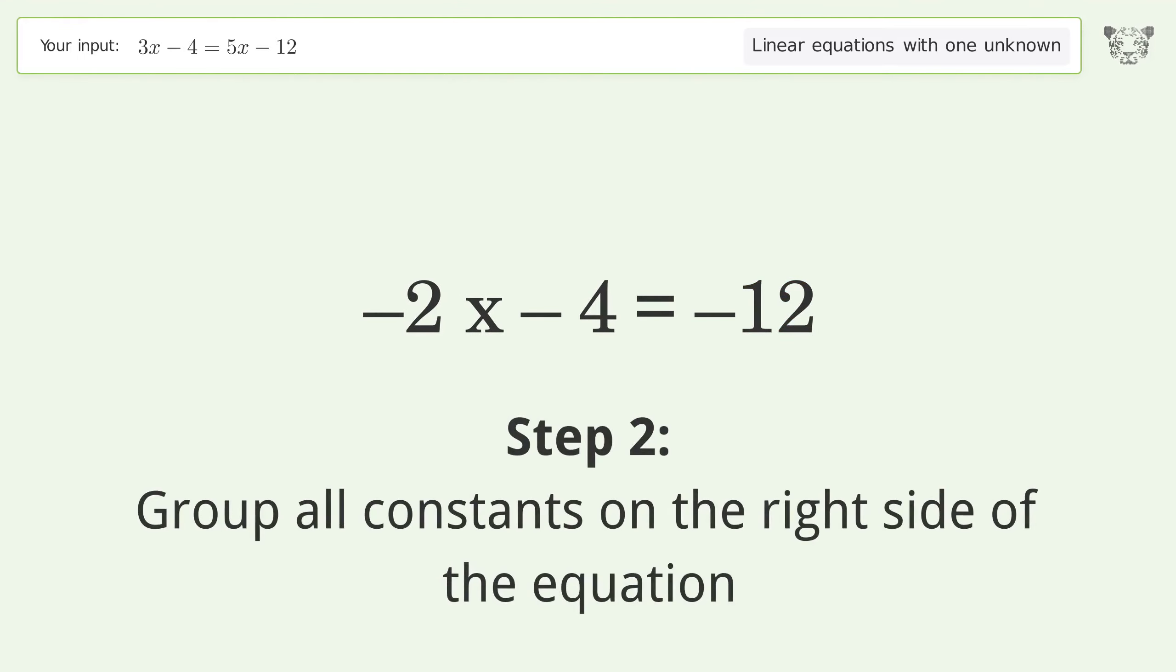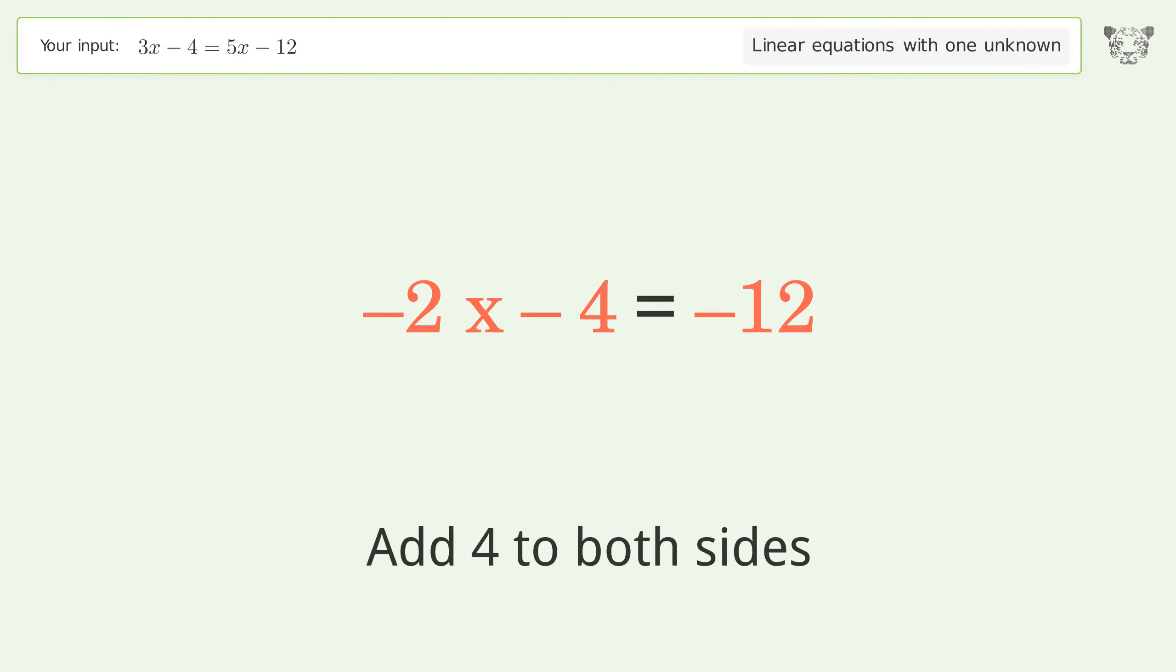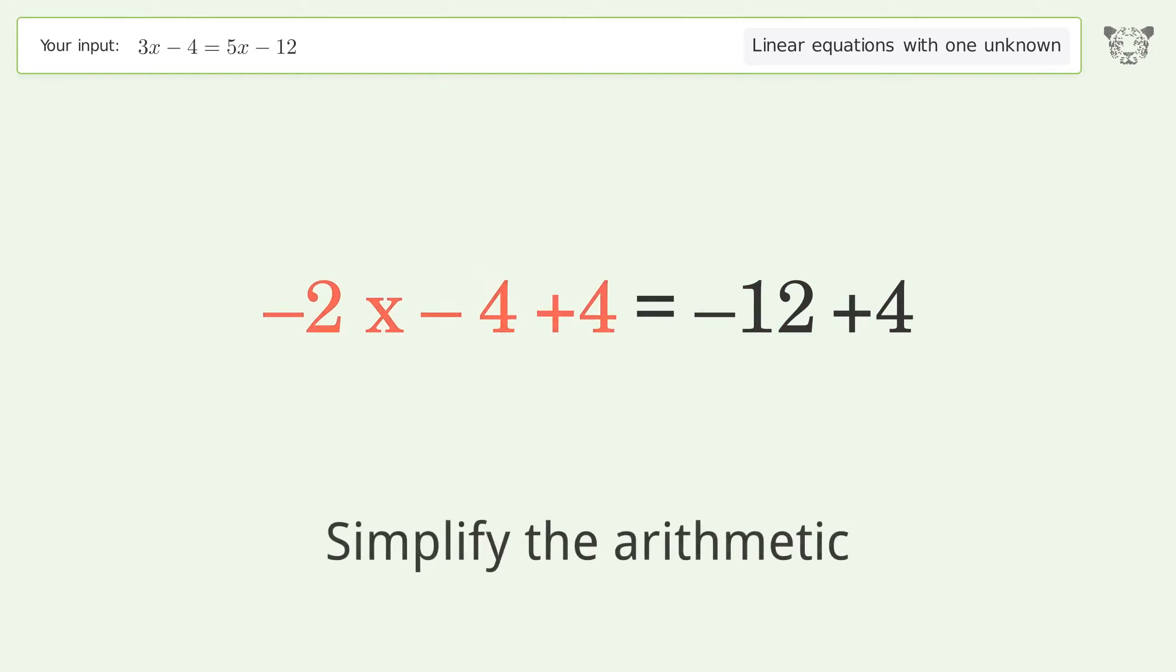Group all constants on the right side of the equation. Add 4 to both sides. Simplify the arithmetic.